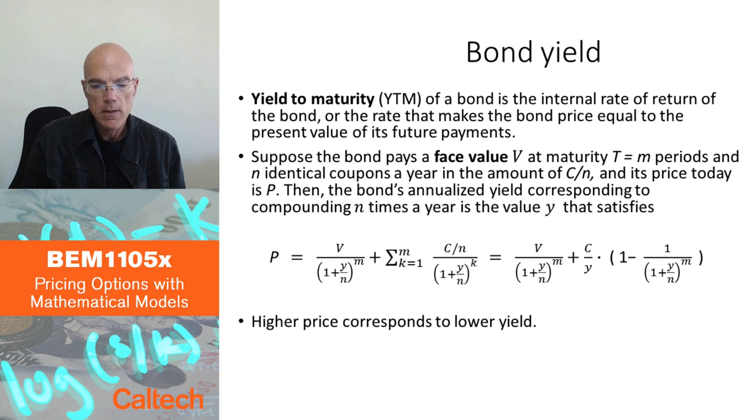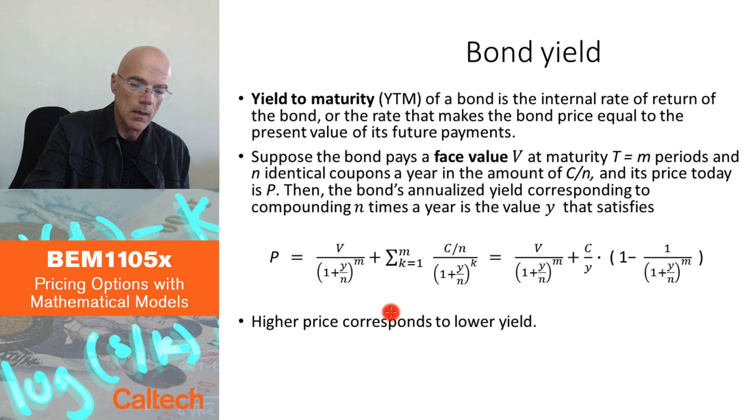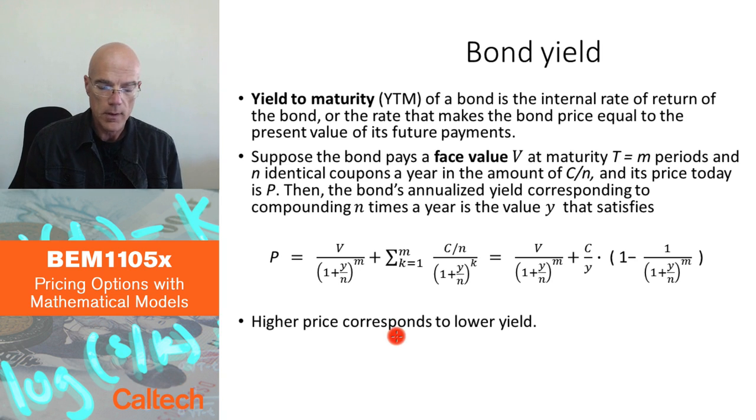Just a small remark here: higher yield corresponds to lower price of the bond and lower yield corresponds to higher price. That's natural because if your bond is returning high return, that means it's cheap and the price is low. If it's returning low return, it means it's expensive. So let's look at that in some graphs.